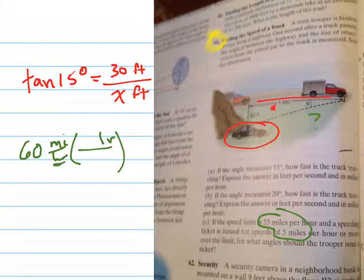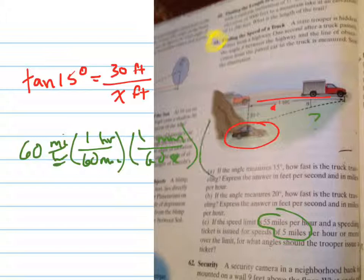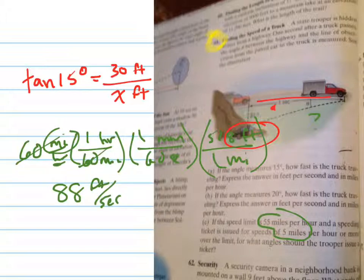So again, using the conversion factors, let's first go from hours, one hour, putting hours on the top, I'm going to put minutes on the bottom, and then I'm going to put one minute on the top, 60 seconds on the bottom, and now let's convert from miles to feet, put miles on the bottom, one mile is 5,280 feet, and now let's multiply that, and we get 88 feet per second.